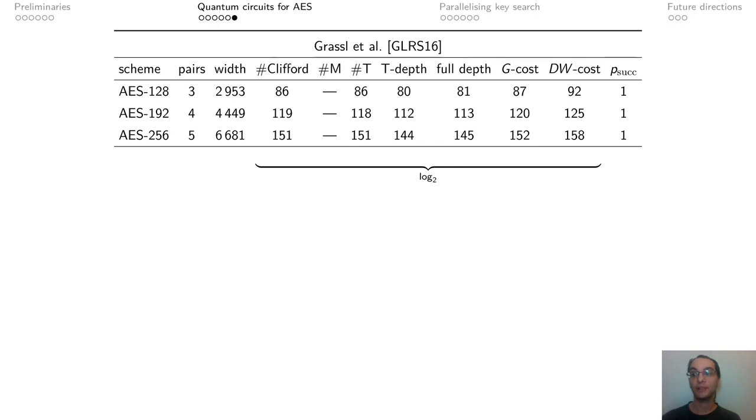We are now looking at the cost reported by Grassl et al. in 2016. No parallelization is being considered. This column indicates the number of plaintext ciphertext pairs that we have. This one indicates the number of qubits that we have. These indicate the number of gates used, where M indicates measurements. Grassl et al. do not use measurements as part of their Grover oracle, where we do as part of our AND gate. Then we have the depth of the circuit, and here we can look at only T gates, or we can consider all the gates. Then we have the total gate count and the total depth times width of the circuit. Finally, we have the probability that Grover's search is successful.